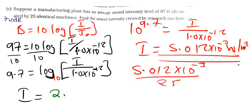Let me just do it here. 5.012, 5.012 exponent negative 3 divided by 25. So what are we getting? So now, the answer I'm getting here is 2.00 times 10 raised to the power negative 4 watts per square meter.